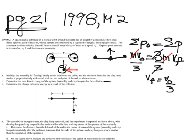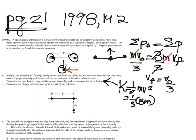Now we can find the kinetic energy after the collision. Kinetic energy is (1/2)(3M)(V₀/3)², which — correcting that to include the 1/2 — gives us 1/6 MV₀². So that was part i.